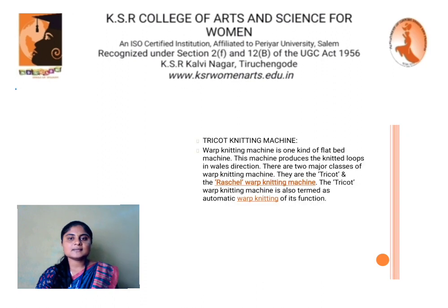Tricot Knitting Machine. Warp knitting machine is one kind of flatbed machine. This machine produces the knitted loops in the wales direction. There are two major classes of warp knitting machine: the Tricot and Raschel warp knitting machine. The Tricot warp knitting machine is also termed as automatic warp knitting because of its function.